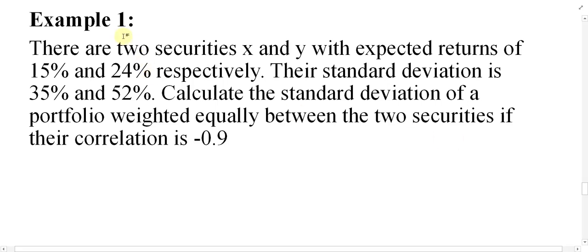Bismillah. Example number one: there are two securities X and Y with expected returns of 15% and 24% respectively. Their standard deviations are 35% and 52%. Calculate the standard deviation of a portfolio weighted equally between the two securities if their correlation is equal to minus 0.9.